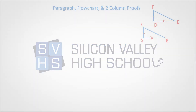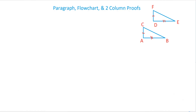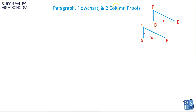The three most common types of proofs are paragraph, flowchart, and two-column proofs. Two-column proofs are probably overwhelmingly the most common seen now. But we'll discuss all three, and we're not going to do proofs necessarily so much as discuss how they work.